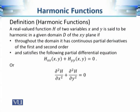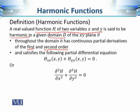Let's recall how we define harmonic functions. A real valued function h of two variables x and y is said to be harmonic in a given domain D — a connected open set of the x-y plane — if two conditions hold. First, throughout the domain, it has continuous partial derivatives of the first and second order: partial h by partial x, partial h by partial y, and also the second order derivatives including the mixed partial derivatives are all continuous. The second condition is that h must satisfy the Laplace partial differential equation.